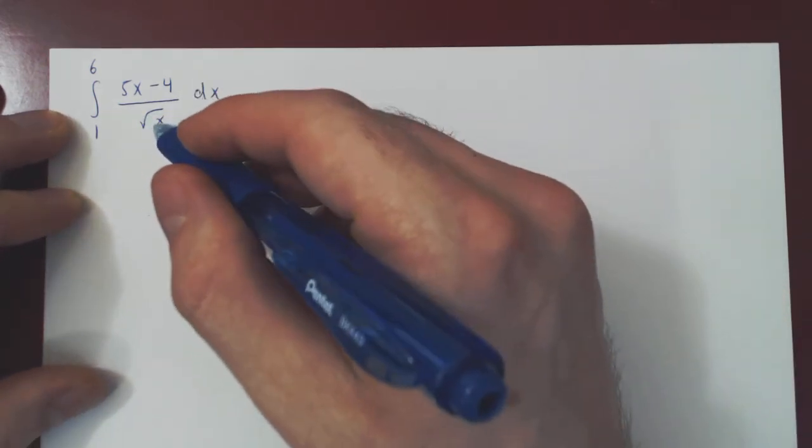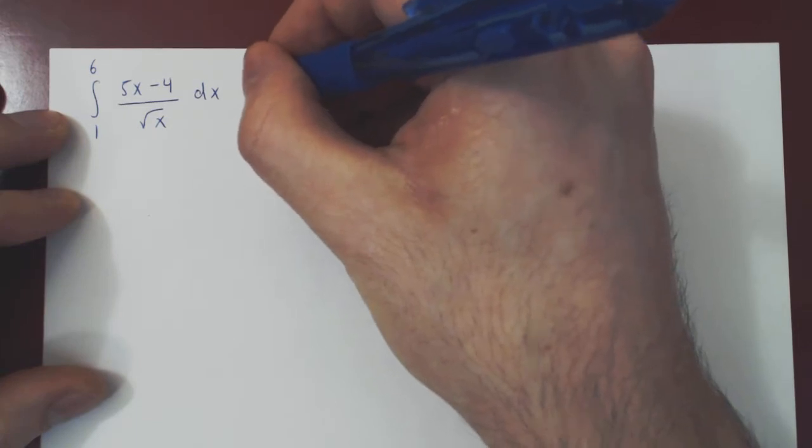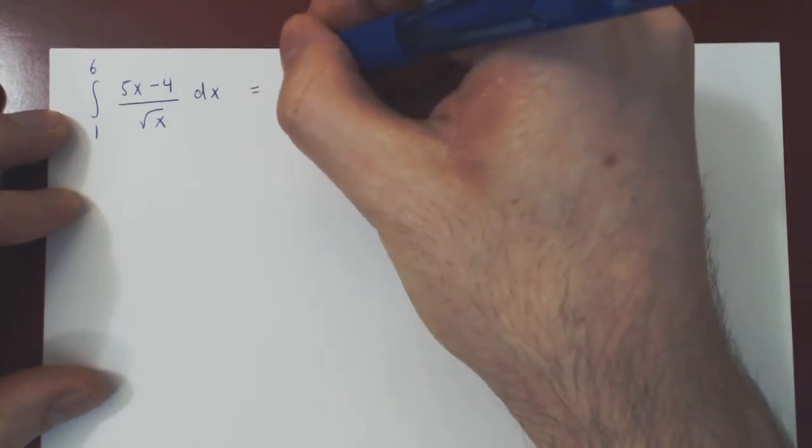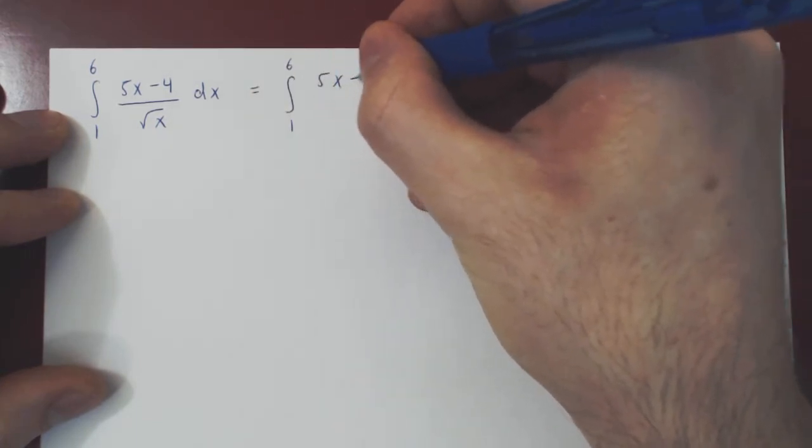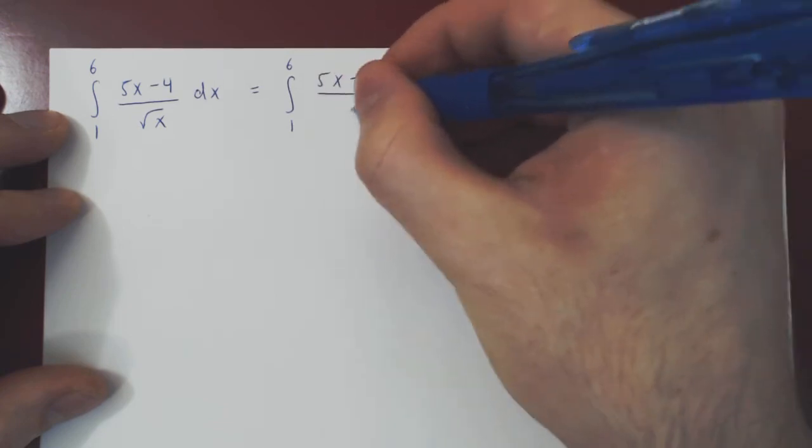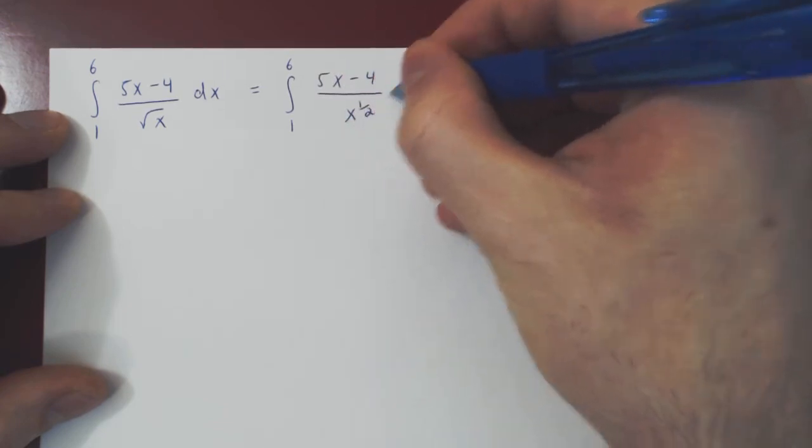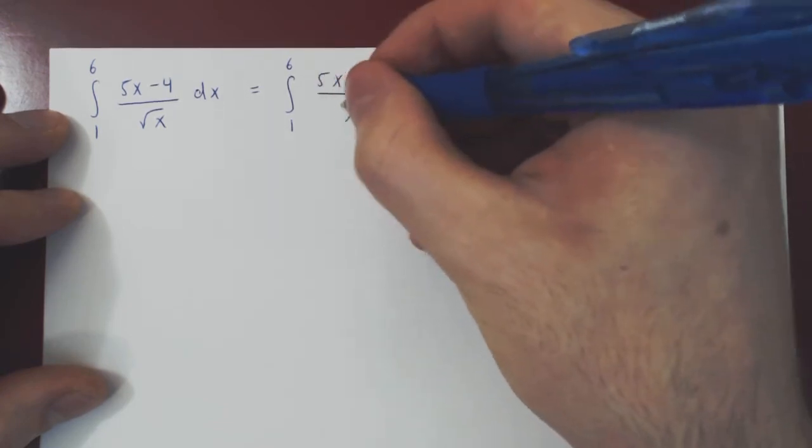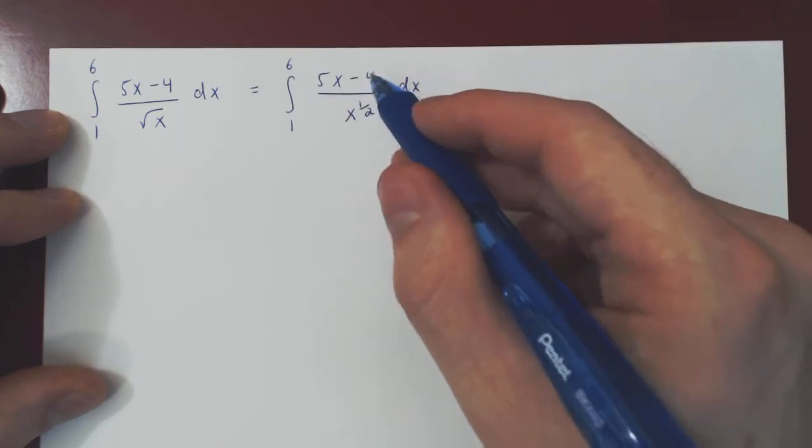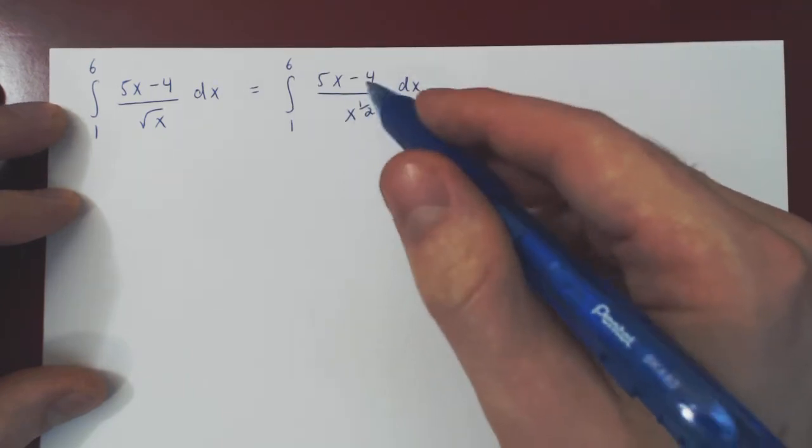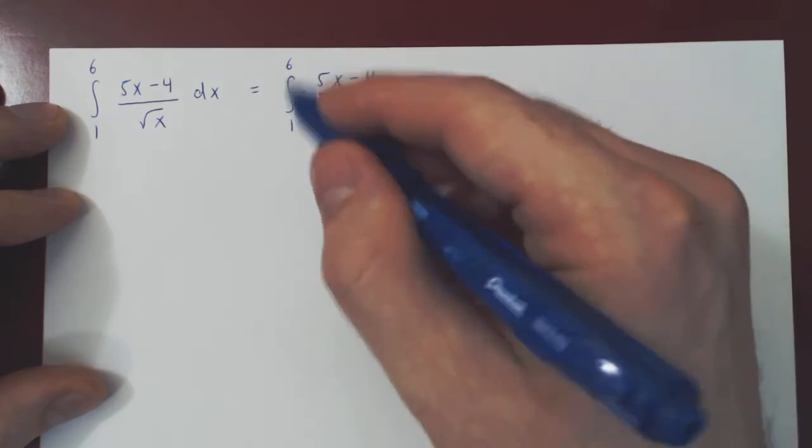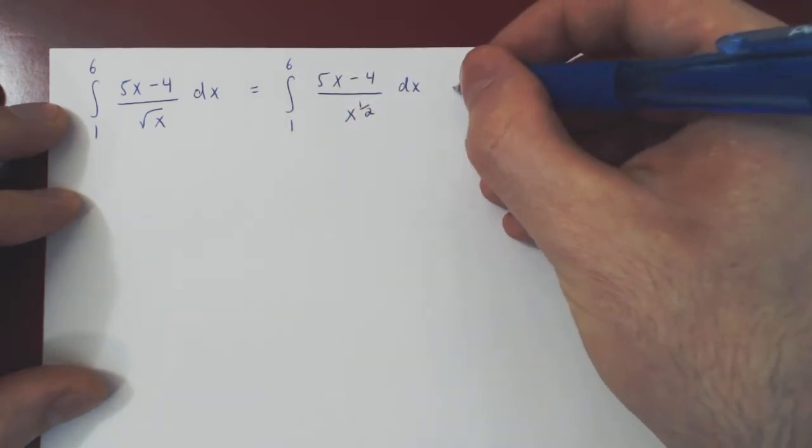Well, this is pretty straightforward, right? Replace root of x by a power of 1 half. And now if we divide through both 5x and 4 by x to the 1 half, we will be able to use the power rule and then simply evaluate with the fundamental theorem of calculus.